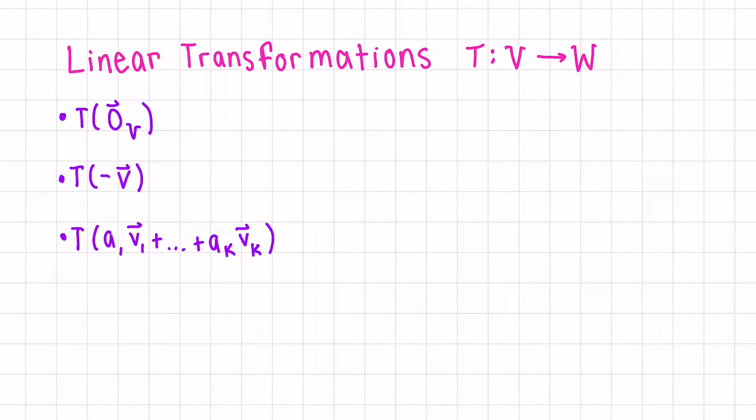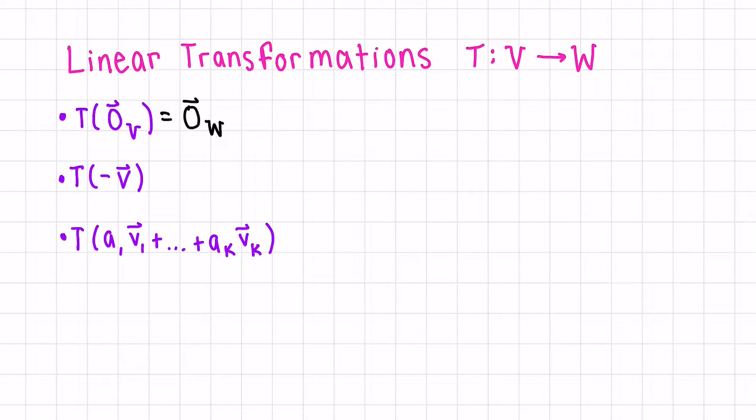Three properties that follow from the definition of a linear transformation: first, the transformed version of the zero vector in vector space V is equivalent with the zero vector in vector space W, in the co-domain. Secondly, if we take the transformation of the negative vector, this is the same as doing negative the transformed version of the original vector. This follows from the closedness of scalar multiplication. And lastly, because T is linear, we could rewrite this expression using both the closedness properties as A1 T V1 all the way till AK T VK.